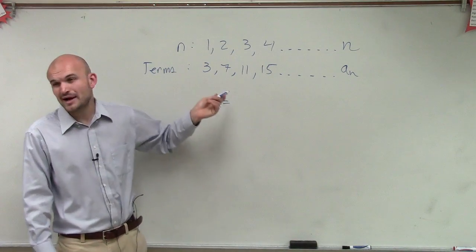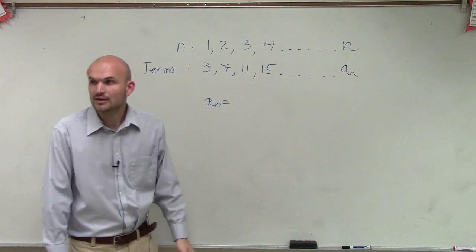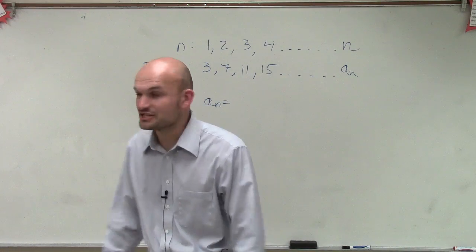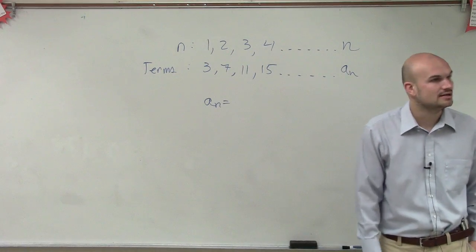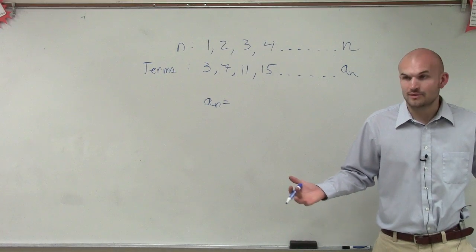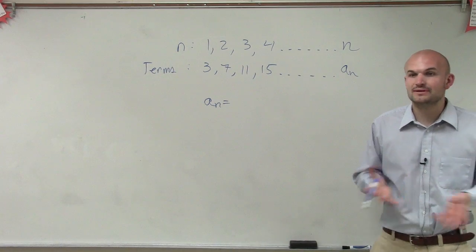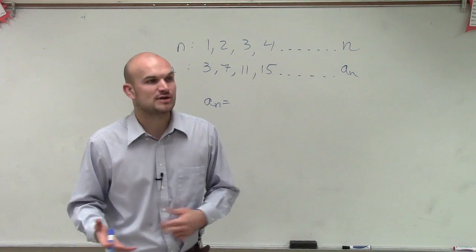So you could say you're adding 2. Well, are you doing that from 2 to 7? No, so that's not going to work. Then we could look into multiplication. You can automatically see this is not going to be a multiplication. So now we need to start looking at a combination of the two. Can we combine multiplying by a number and then adding or subtracting by another number?